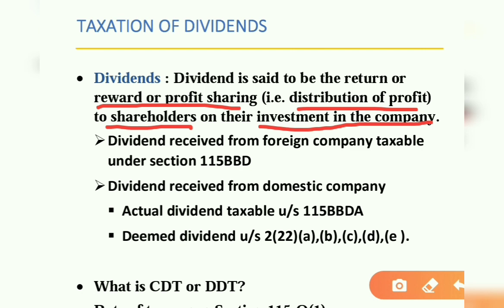Wo bhi do tarike ka hota hai. Ek hota hai actual dividend, which is taxable under Section 115BBDA. Aur second one is deemed dividend under Section 2, subsection 22. Subsection hota hai A, B, C, D and E. Ye saare sections ko hum log brief mein discuss karenge.